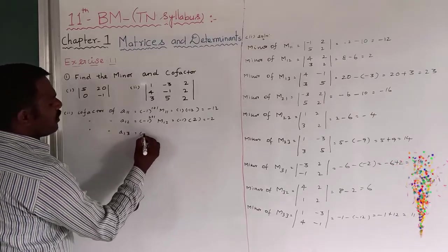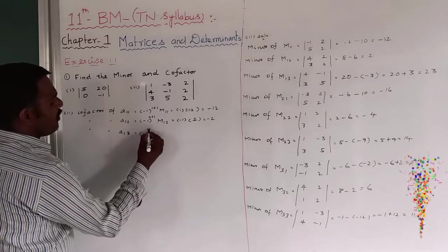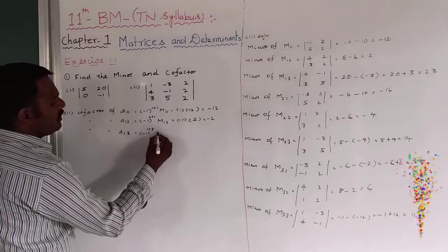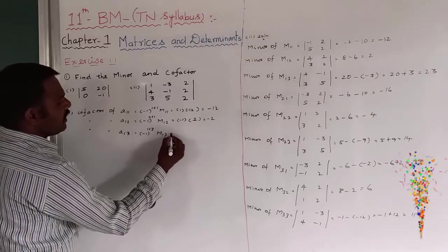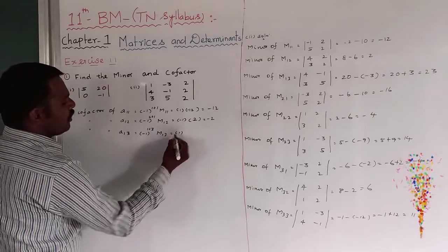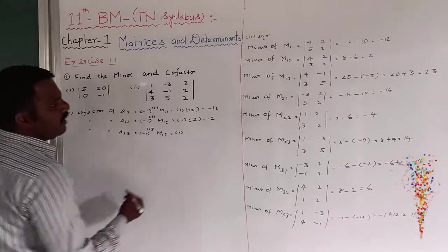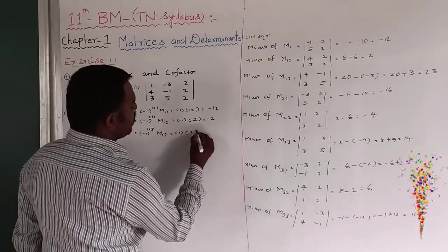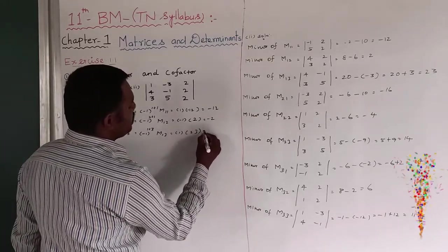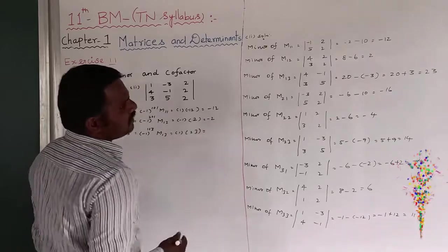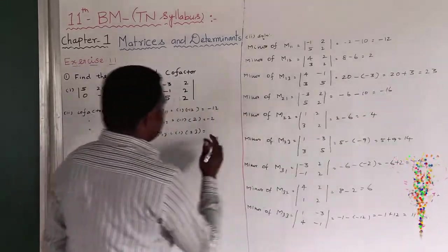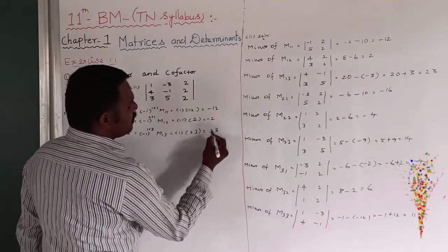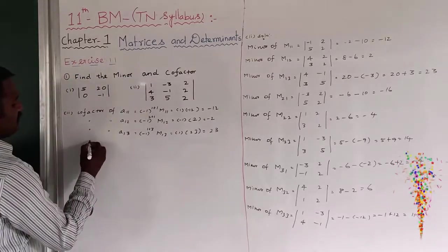The cofactor of a13 is minus 1 to the power 1 plus 3, which equals 4. Then M13 gives plus 1. M13 is equal to 23. So 23 into 1 equals 23.